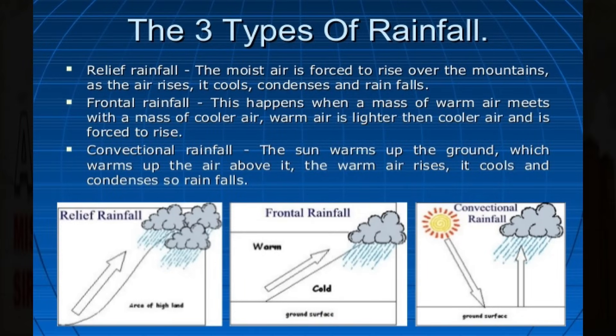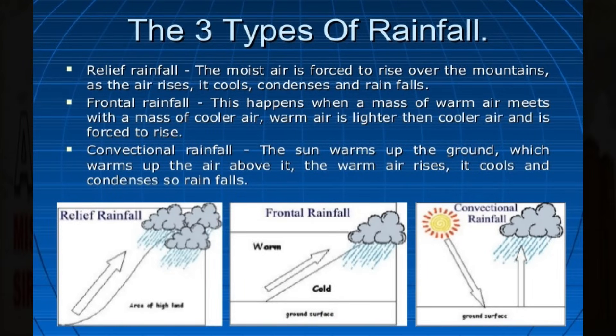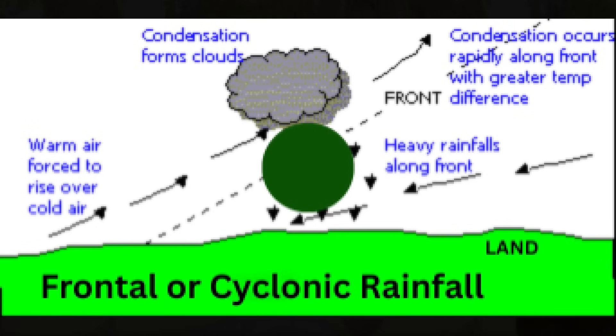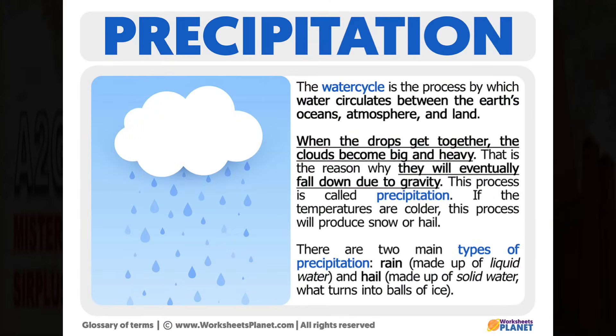Convectional rainfall is one of the three main types of rainfall. You also have relief rainfall, also known as orographic rainfall, and you have depressional or cyclonic rainfall. Now, rainfall, as you know, is a type of precipitation. And precipitation is a big word that means any moisture that descends from the atmosphere, or the sky, coming down to the earth.